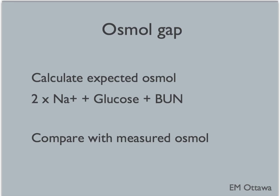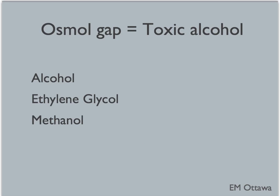We now try to narrow it down by doing another calculation called the osmogap. To calculate the osmogap, we first calculate the expected osmolality, which is 2 times sodium plus glucose plus BUN. Once you have that expected osmolality number, you compare it with what's measured in the serum. The difference between the two — the osmogap — can vary from individual to individual; however, an osmogap greater than 10 is regarded as abnormal. There are only a handful of things that can cause an osmogap. A few of them include alcohol, ethylene glycol, and methanol. Other things such as mannitol can also cause an osmogap, but that's a medication we typically give the patient rather than one they ingest.